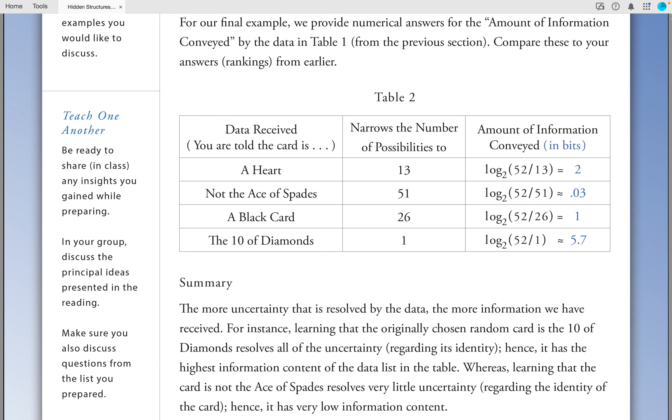Summary: The more uncertainty that is resolved by the data, the more information we have received. For instance, learning that the original chosen random card is the Ten of Diamonds resolves all of the uncertainty regarding its identity. Hence, it has the highest information content of the data listed in the table. Whereas, learning that the card is not the Ace of Spades resolves very little uncertainty regarding the identity of the card. Hence, it has a very low information content.